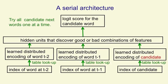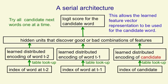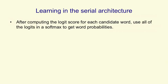So we try all the candidate words one at a time. By putting in the word as a candidate at the bottom, we're able to use the learned feature vector for that candidate word that we learned when it was a context word. We can have the same representation of the word when it's part of the context and when it's a candidate for the next word that we're trying to predict. Learning in the serial architecture works in the following way. We first compute the score for each possible candidate word, and then we put all those scores, which we computed sequentially, into a big softmax to get word probabilities.